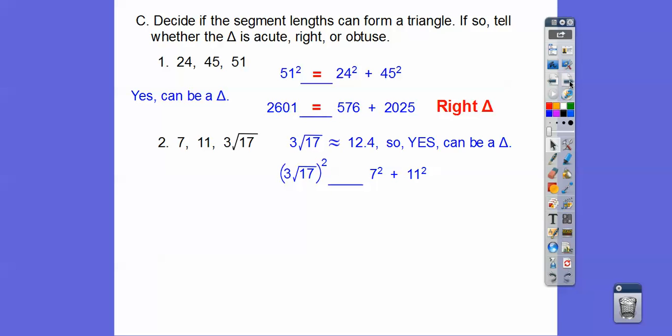So we want to square that. When we square a number with a radical, we square the number, we square the radical, and then we multiply those squares together. This is 49, this is 121 right there. So here we go, square 3, square the radical, we get 9 times 17, which is 153. So what relationship does 153 have with 49 and 121? It's less than, therefore it's an acute triangle.